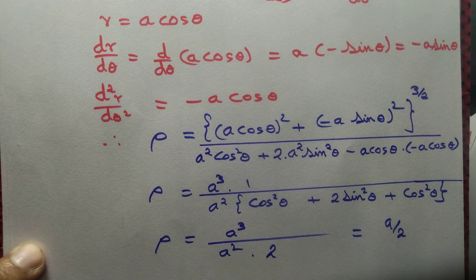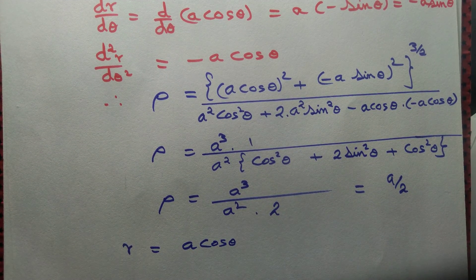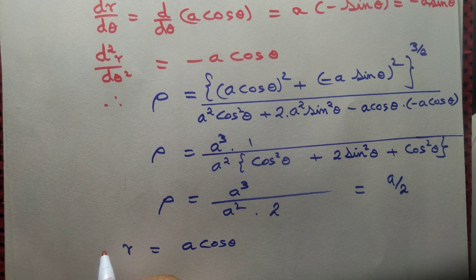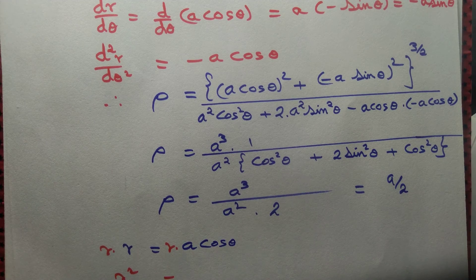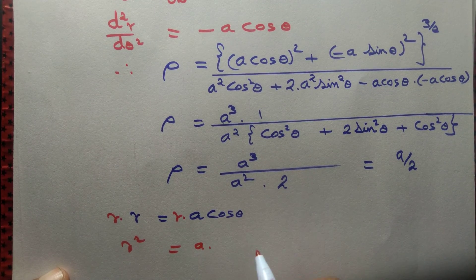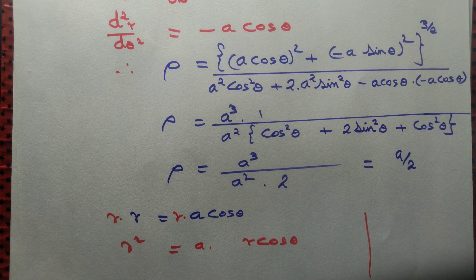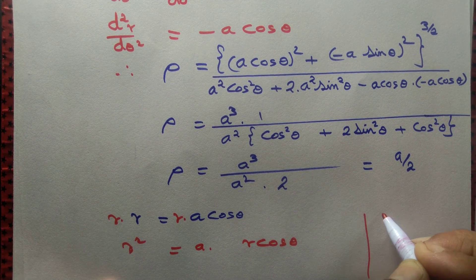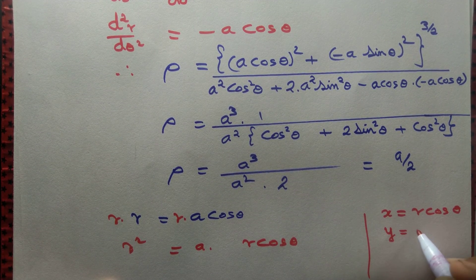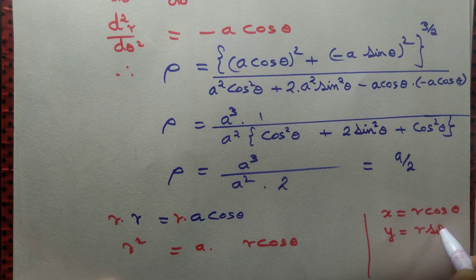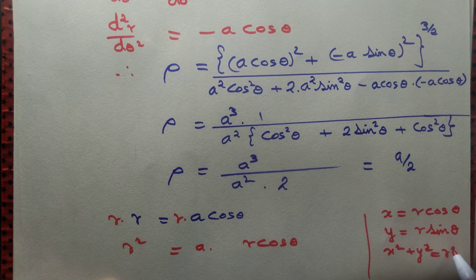r equal to a cos theta. Let's multiply both sides by r, so r² equals a times r cos theta. Now we switch from polar to Cartesian. Then x equals r cos theta, y equals r sin theta, and then x² plus y² equals r².